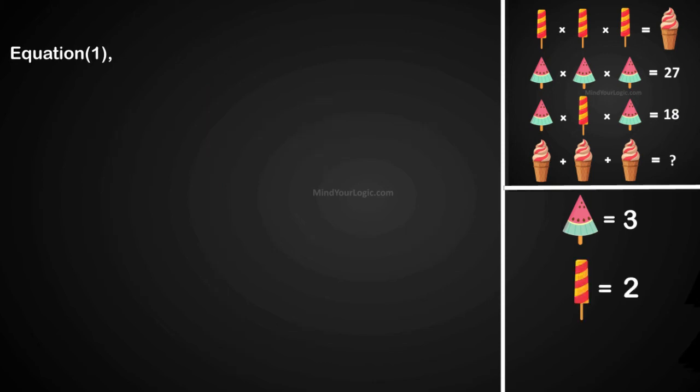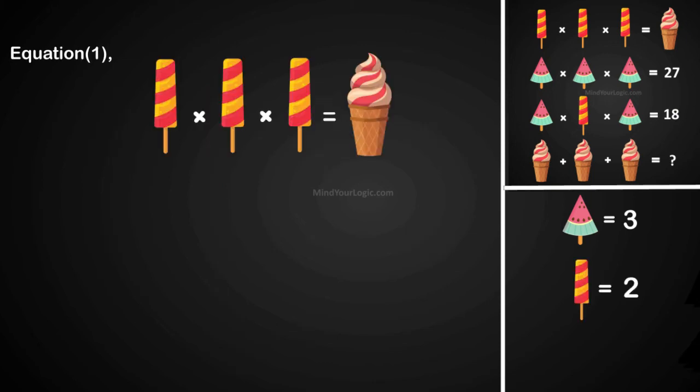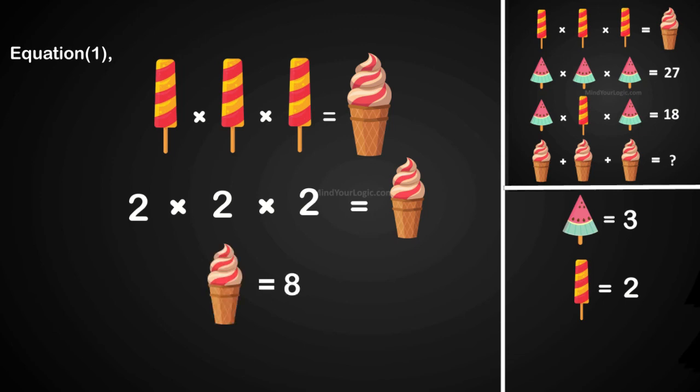Now similarly solving equation 1. Ice candy multiply ice candy multiply ice candy equals ice cream cup. Substituting the value we get ice cream cone as 8.